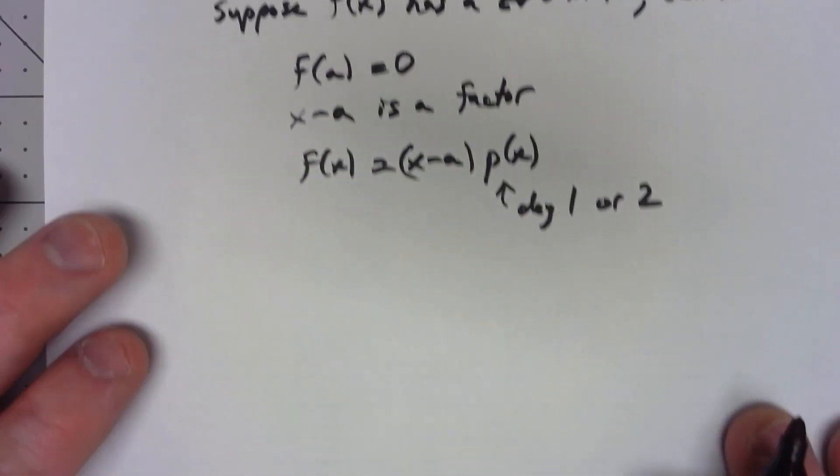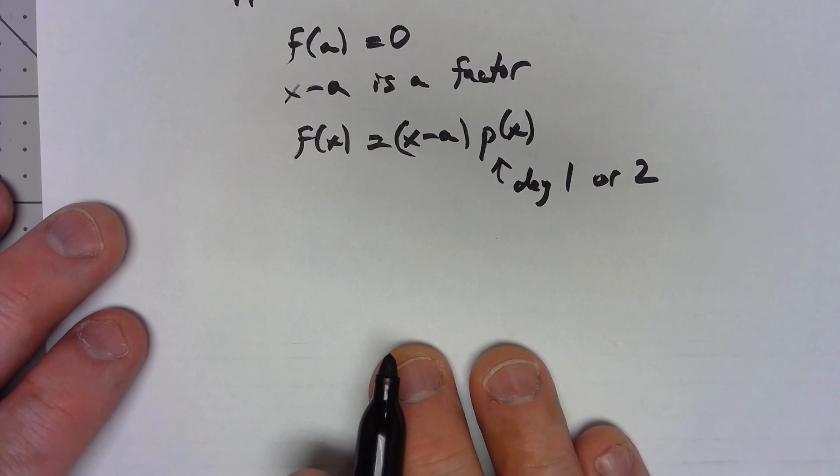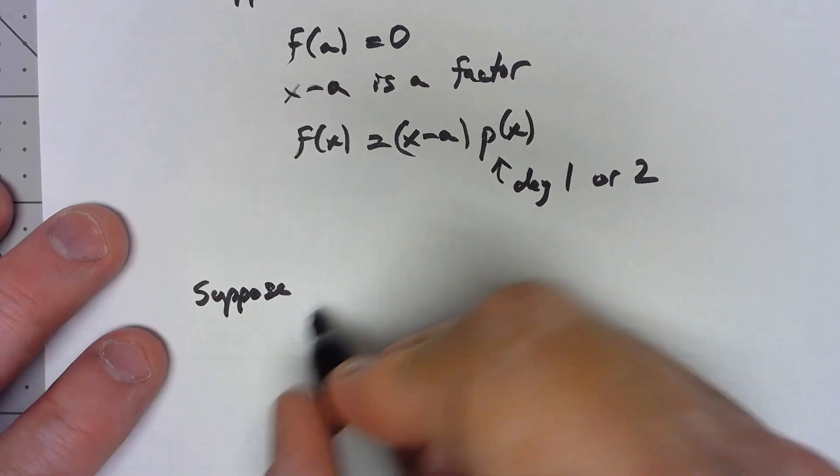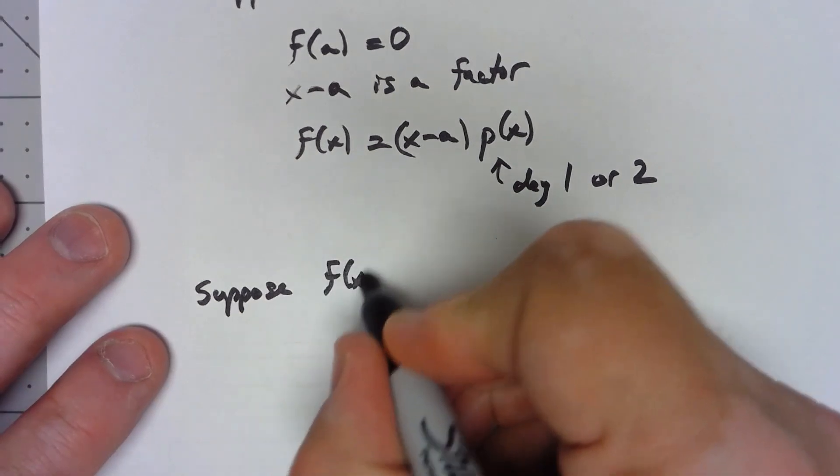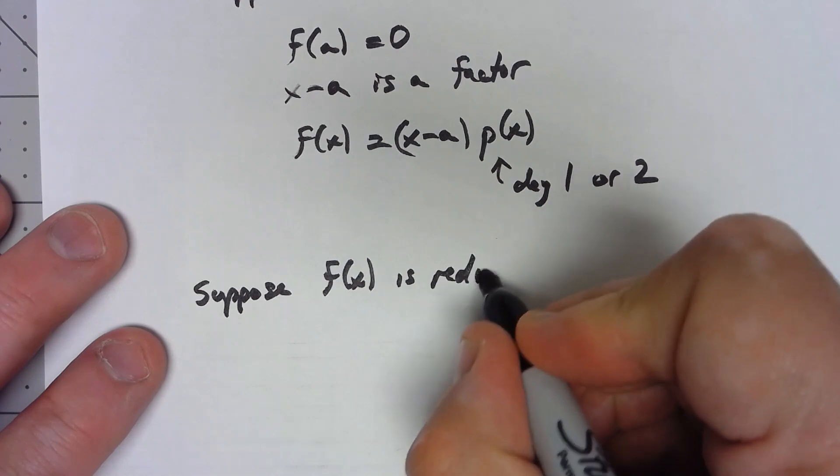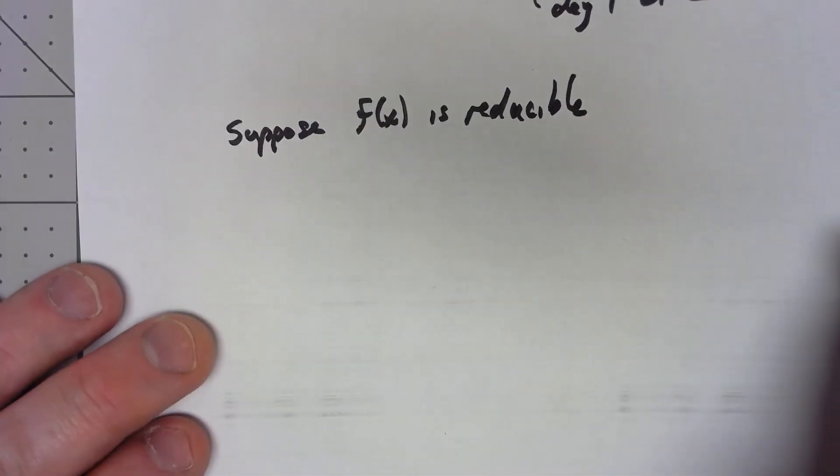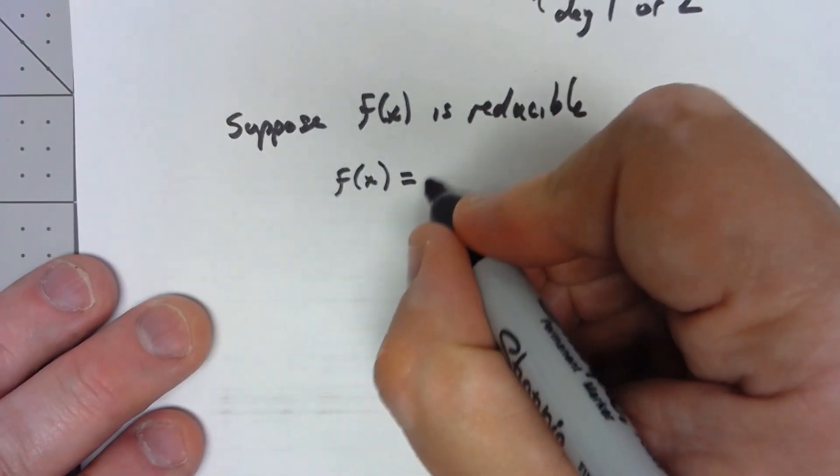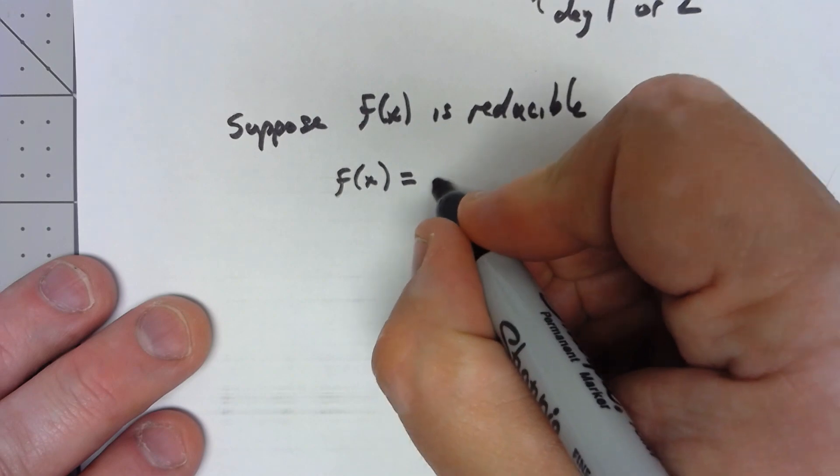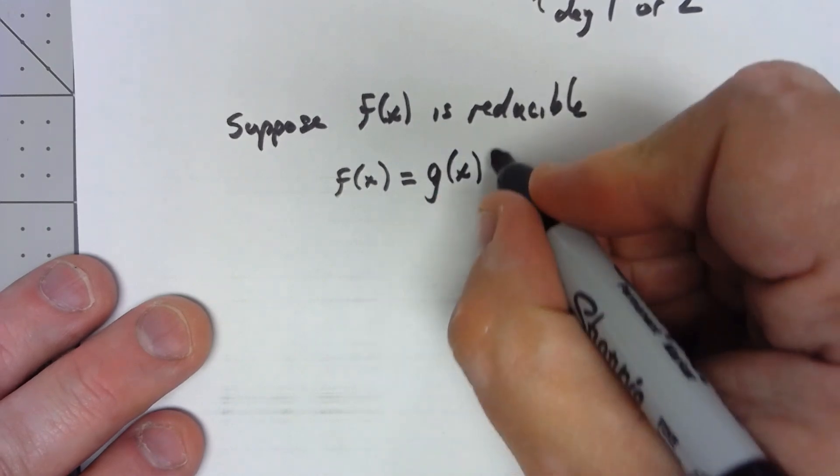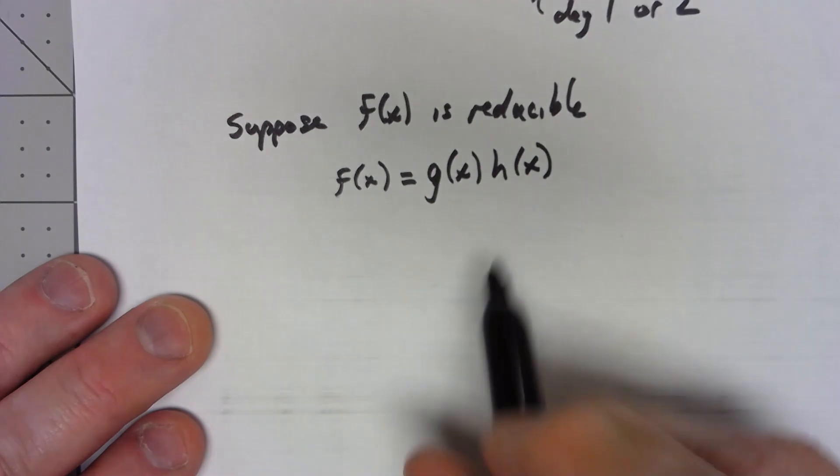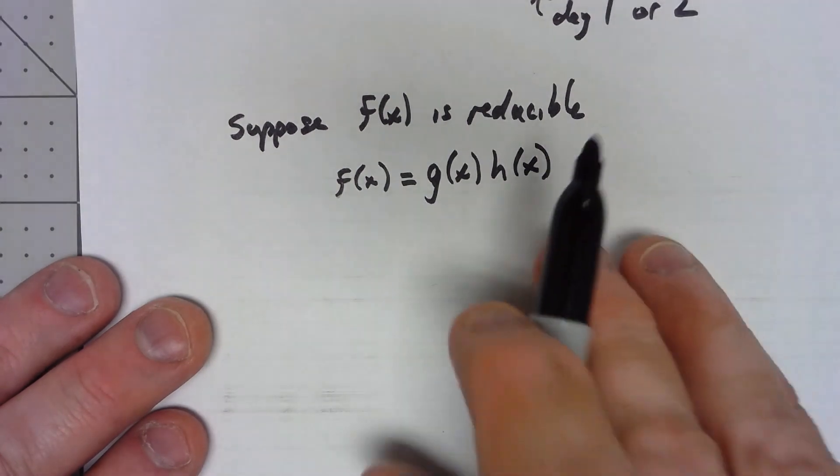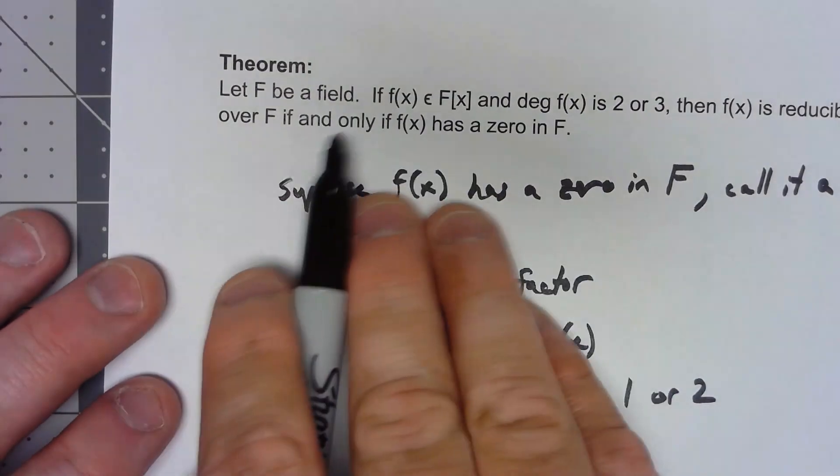So let's try the other way. Suppose f(x) is reducible. So that means that we can write f(x) equals some g(x) times h(x) and these things can't be units. Now let's think about this because we're working over a field these things can't be just numbers, can't be just field elements.